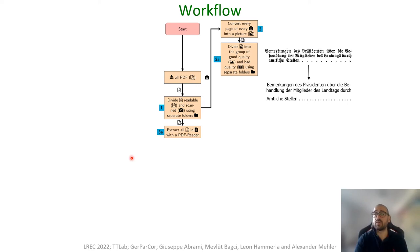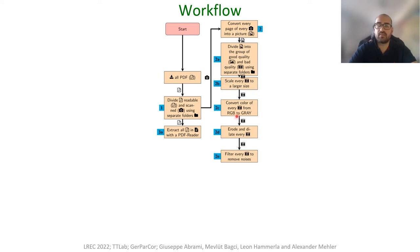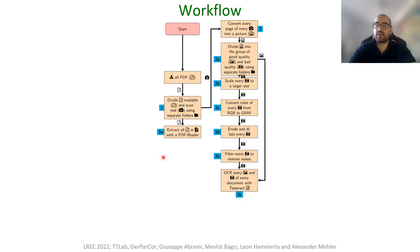We use Tesseract because it also supports German and Fraktur. For the OCR process, we must convert every page into a picture. After that, we divide the pictures into good quality and bad quality, because for bad quality pictures Tesseract recommends some preprocessing steps. We have an example here of a Fraktur text: 'Bemerkung des Präsidenten über die Behandlung der Mitglieder des Landtags durch amtliche Stellen.' Every bad picture will be scaled, decolorized, de-noised, and processed to remove noise so the OCR process can read it better and extract the actual text. Then it is possible to extract every picture with Tesseract to get the text of the actual document.